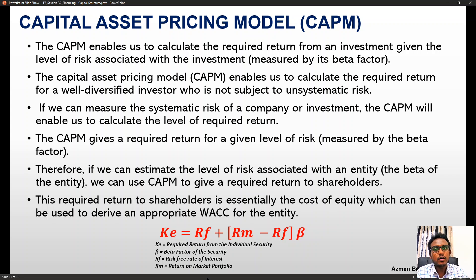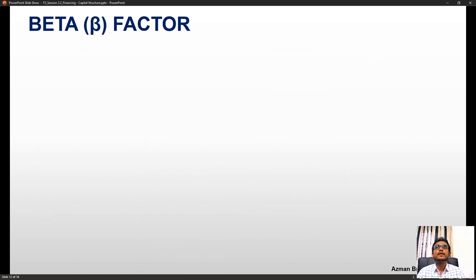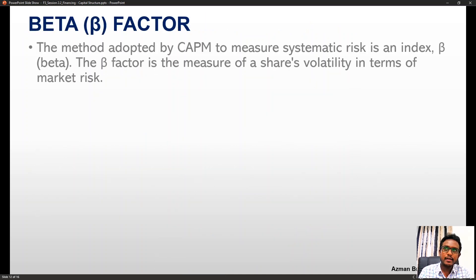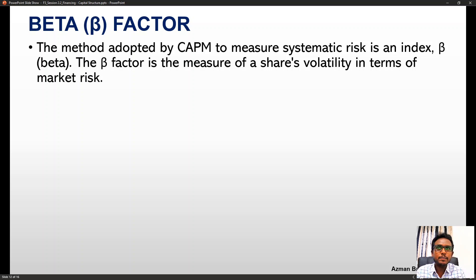In the CAPM formula, cost of equity is the required return from the individual security, beta is the beta of the security, RF is the risk-free rate of interest, and RM is the return on the market portfolio. The method adopted by CAPM to measure systematic risk is an index — beta. The beta factor is the measure of a share's volatility in terms of market risk relative to the market.